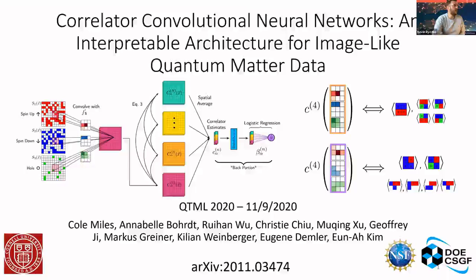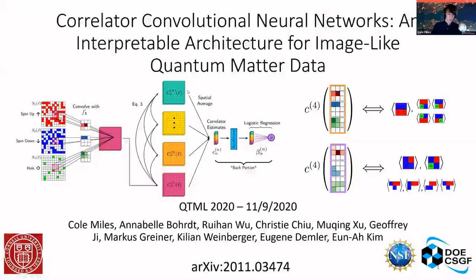On that note, we move to our next speaker, Cole Miles from Cornell University. His title is: An Interpretable Nonlinear Convolutional Layer for Machine Learning of Multi-Site Correlators. Cole thanks the conference organizers and Annabelle for covering the background of the Fermi-Hubbard model.